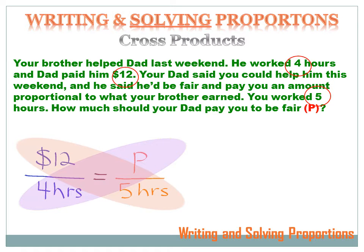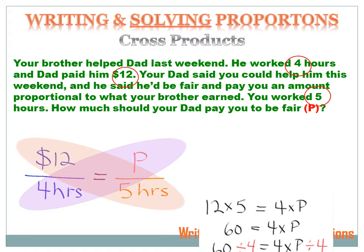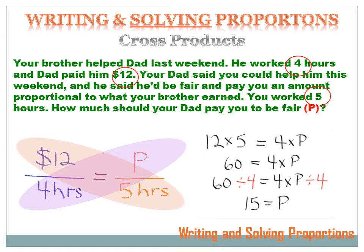Our fractions are $12 per four hours equals how many dollars per five hours. Using the cross product, I multiply 12 times 5 and set that equal to P times 4. 12 times 5 equals 4 times P. 12 times 5 is 60, and that still equals 4 times P, but now I've got an algebra problem. I want to solve for P, which means I've got to get rid of that multiplication by 4. To get rid of multiply by 4, I divide by 4, and if I divide the right side by 4, I need to divide the left side by 4 as well. 60 divided by 4 equals 15. The two 4s cancel each other out on the right and leave just P, so P — the amount of money your dad should pay you — equals $15.